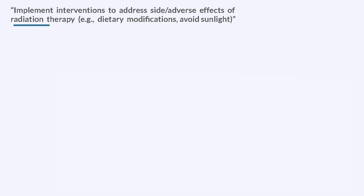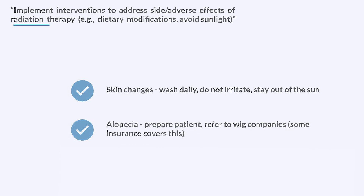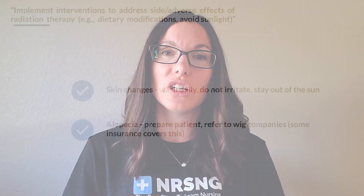We need to implement interventions to address these adverse effects from radiation. For skin changes, we need to remind the patient to wash their skin daily, do not irritate that skin, and stay out of the sun. For alopecia, which is hair loss, we want to prepare the patient for this. It's likely they've already been educated on the fact that they're going to lose their hair, but extra reinforcement is always helpful. We can even refer them to wig companies, and some insurances even cover wigs for patients who are getting radiation.